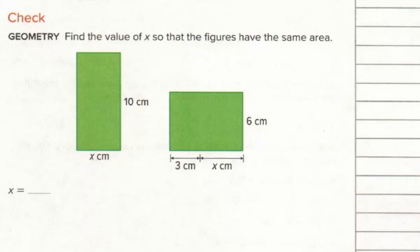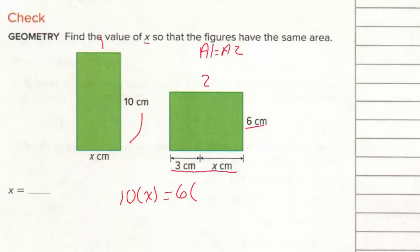This next problem also asks: find the value of x so the figures have the same area. We set area of figure 1 equal to area of figure 2. The left figure is length times width: 10 times x. The right figure has a 6 on the outside and a side of x + 3. Distributing gives us 10x = 6x + 18.